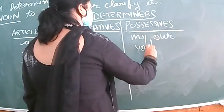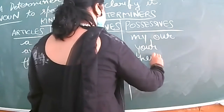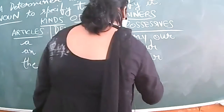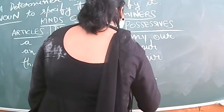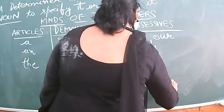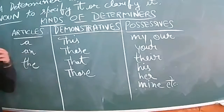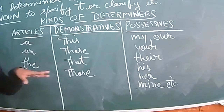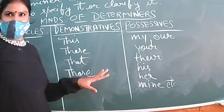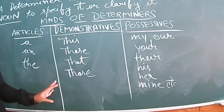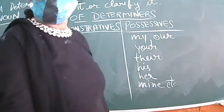Examples of possessives include: my, our, your, their, his, mine, hers, etc. I write 'etc' because there are many — 'hers' also exists, for example 'this bag is hers'. All such words are examples of possessives.